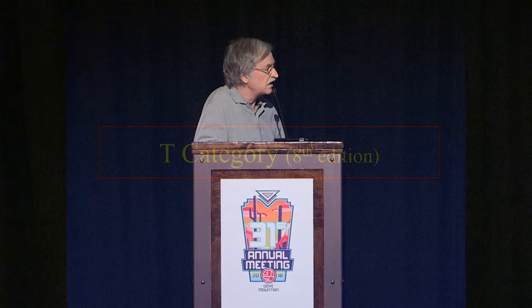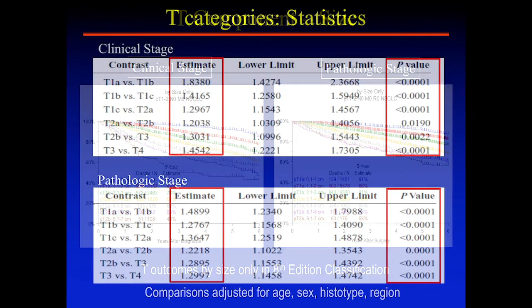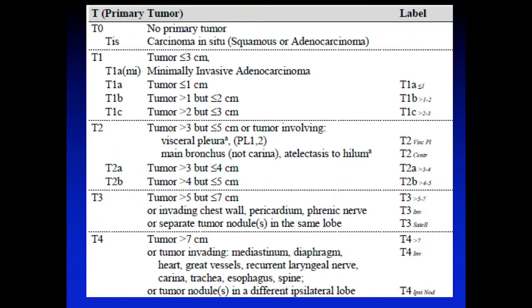The T category was broken down by size into one-centimeter increments. Looking at the survival curves and statistical analyses, we ended up with T1 divided into one-centimeter increments: T1a (up to 1 cm), T1b (1 to 2 cm), and T1c (2 to 3 cm). T2 is also divided into one-centimeter increments.